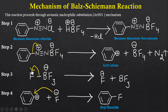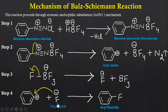In step 3, the F–B bond breaks due to the higher electronegativity of fluorine, yielding a fluoride ion and a neutral BF3 molecule. This fluoride ion acts as a nucleophile and attacks the aryl cation, which is an electrophile. In this way, the aryl fluoride molecule is formed.